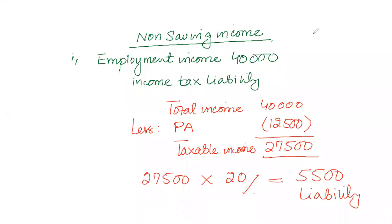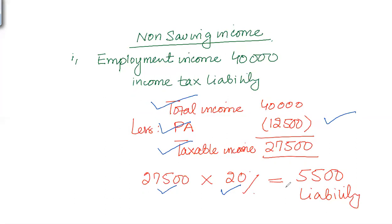Employment income is given as £40,000 and we have to calculate income tax liability. As employment income is part of non-saving income, we identify the total income — just one source of income — then deduct personal allowance of £12,500, giving taxable income of £27,500. The basic rate of 20% is applicable, so the tax liability is £5,500.